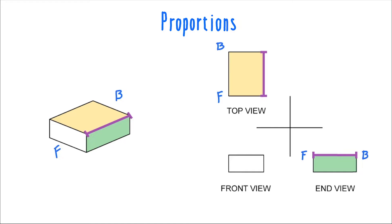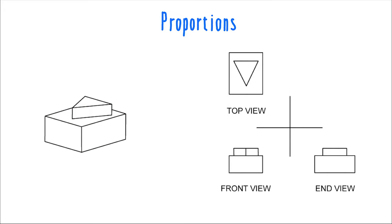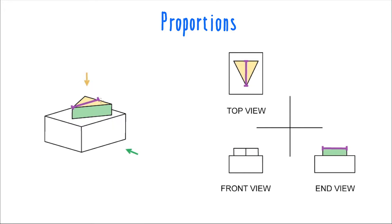You can use this same set of relationships to analyze the proportions of individual parts of an object. With a simple block with a triangular feature on top, even just that top section must have the same overall height in the front view as in the end view. The overall width of this section in the top view is going to be the same in the front view, and the length from front to back will correspond to the overall length of this section in the end view.